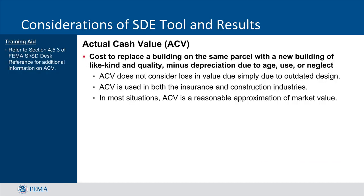Actual Cash Value, or ACV, is the cost to replace a building on the same parcel with a new building of like kind and quality, minus depreciation due to age, use, or neglect. It does not consider loss in value simply due to outdated design. In most situations, ACV is a reasonable approximation of market value. For more information on ACV, refer to Section 4.5.3 of the Substantial Improvement Substantial Damage Desk Reference.